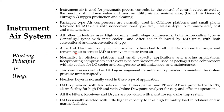A part of plant air from the plant air receiver is branched to all utilization points for usage, and the remaining air is sent to the instrument air dryer to remove moisture from the air to get the required dew point.